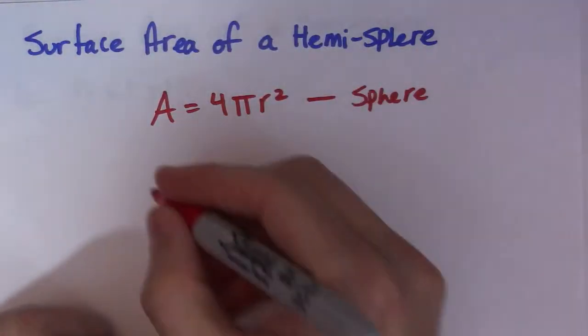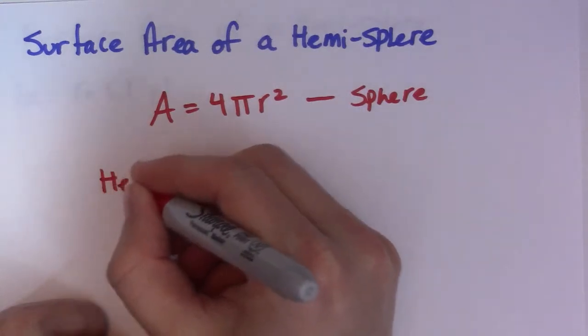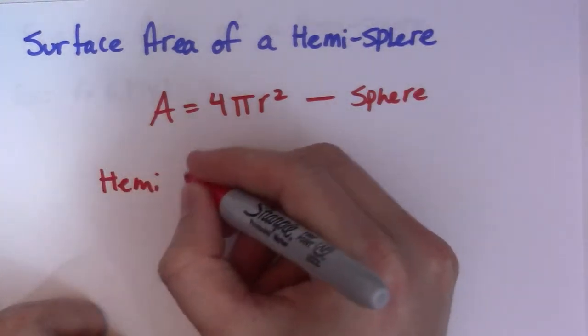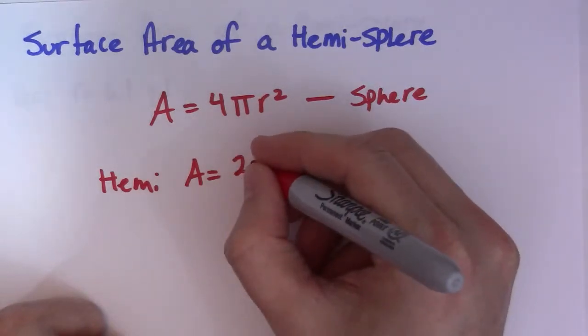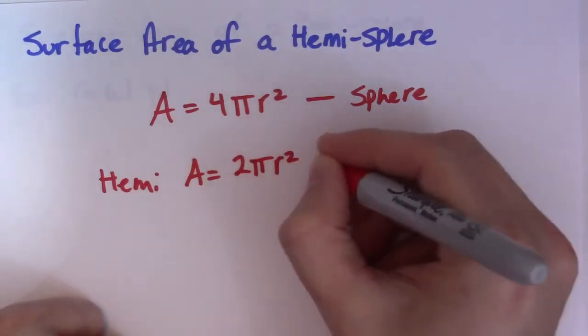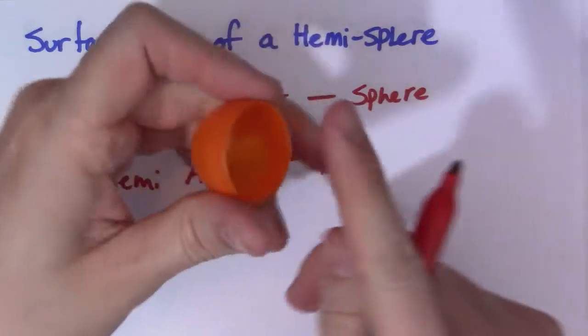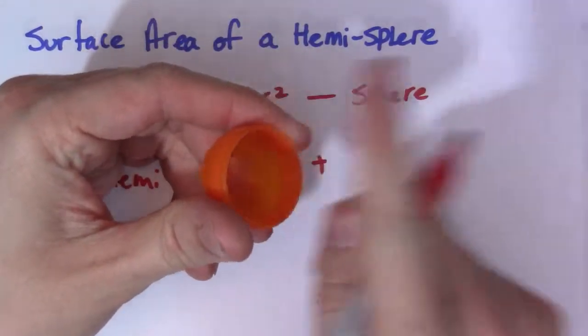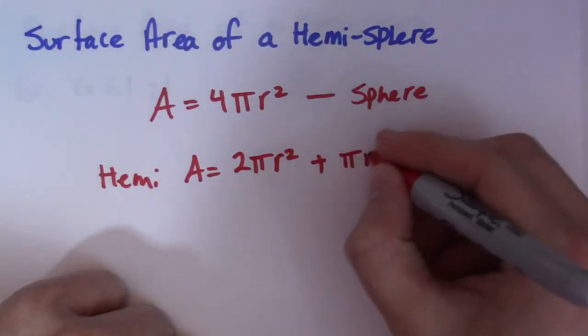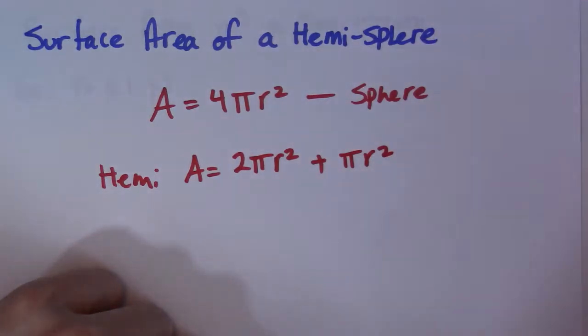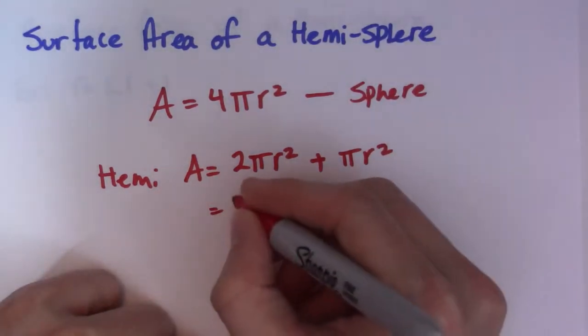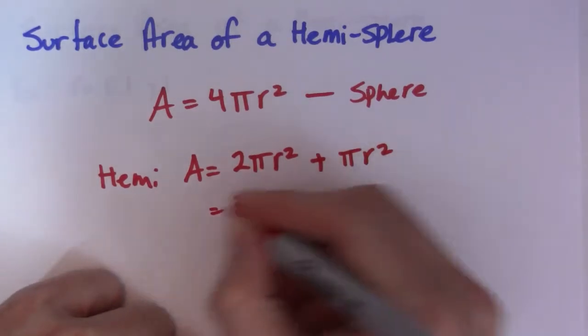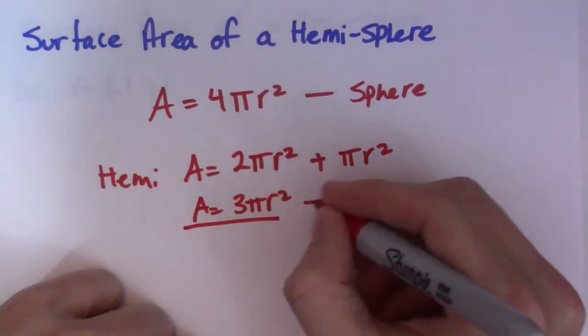So what we actually get for a hemisphere is half of the normal surface area, which would be 2πr². And the other part, which is this flat circle here, is just πr². Which gives us 3πr². So this is the surface area of the hemisphere.